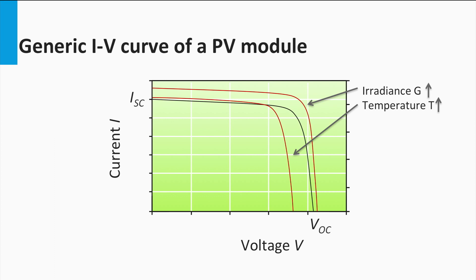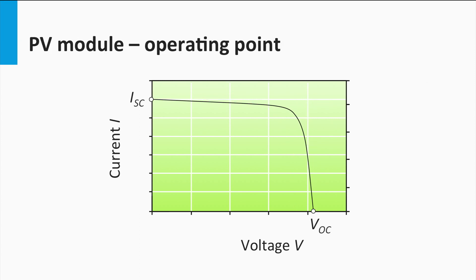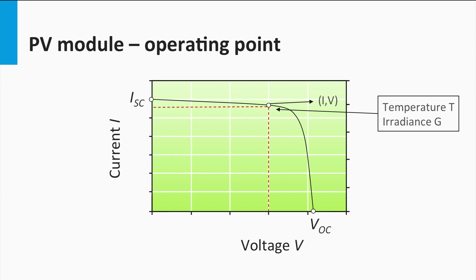Now let's try to understand the concept of the operating point. At any given point in time the solar module operates at a particular voltage and current. The point on the IV curve where the solar module operates is called the operating point. For a given irradiance and temperature, an operating point on the IV curve corresponds to a unique IV value.